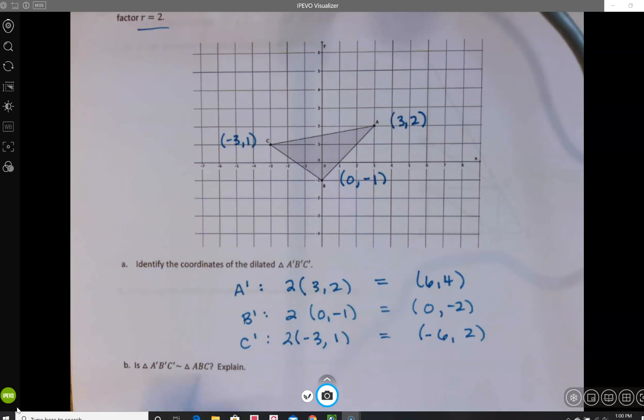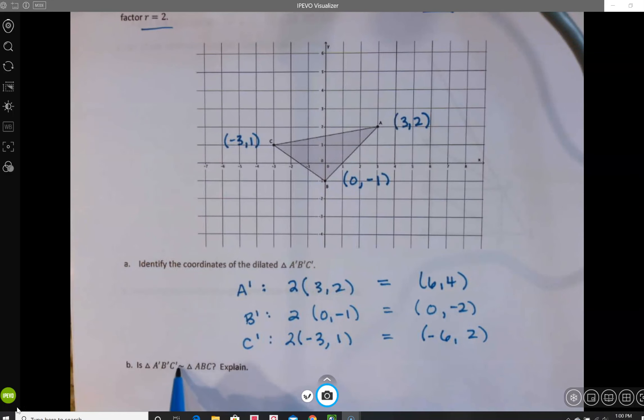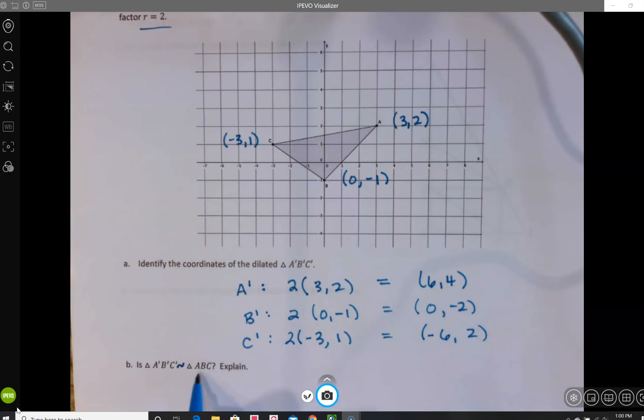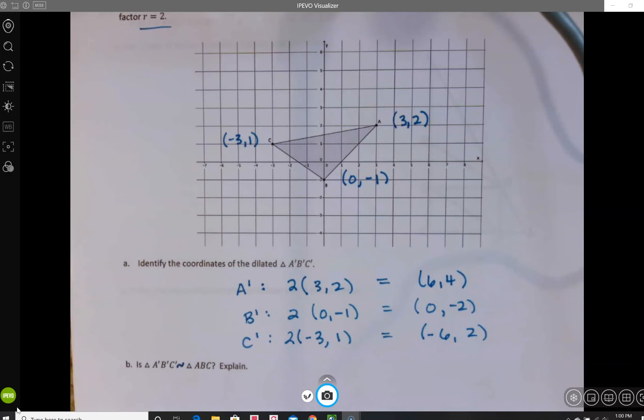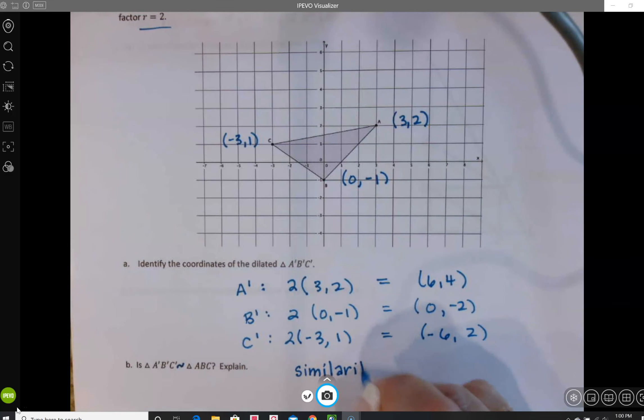Now, the question is, is triangle A prime B prime C prime similar to triangle ABC? Remember, this squiggle means is similar to. So in order to answer that question, we need to think about the definition of similarity.